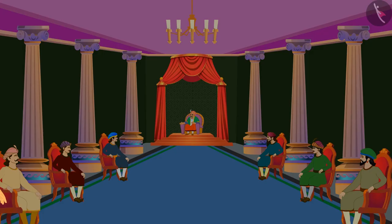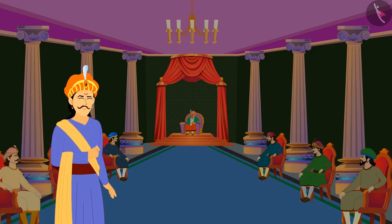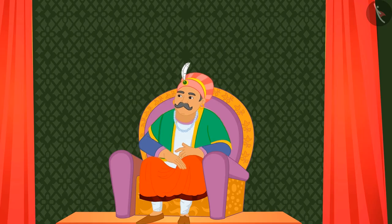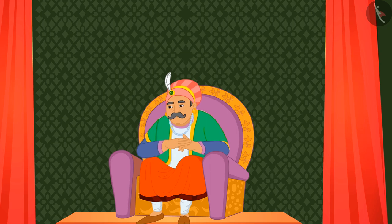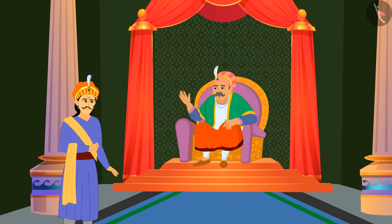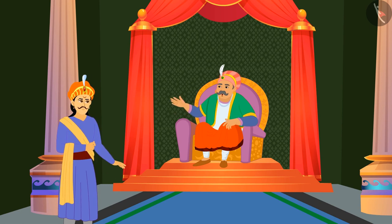The next day, Birbal went to Akbar's palace to answer the third puzzle. Akbar is also ready with the third puzzle. He told Birbal that it won't be easy for him to answer today's questions.